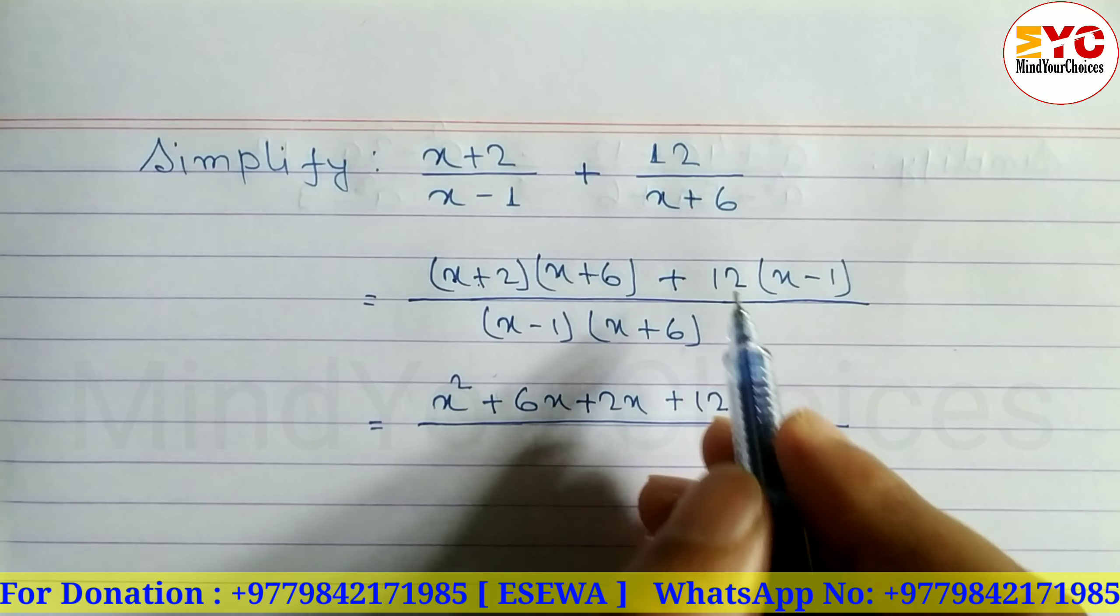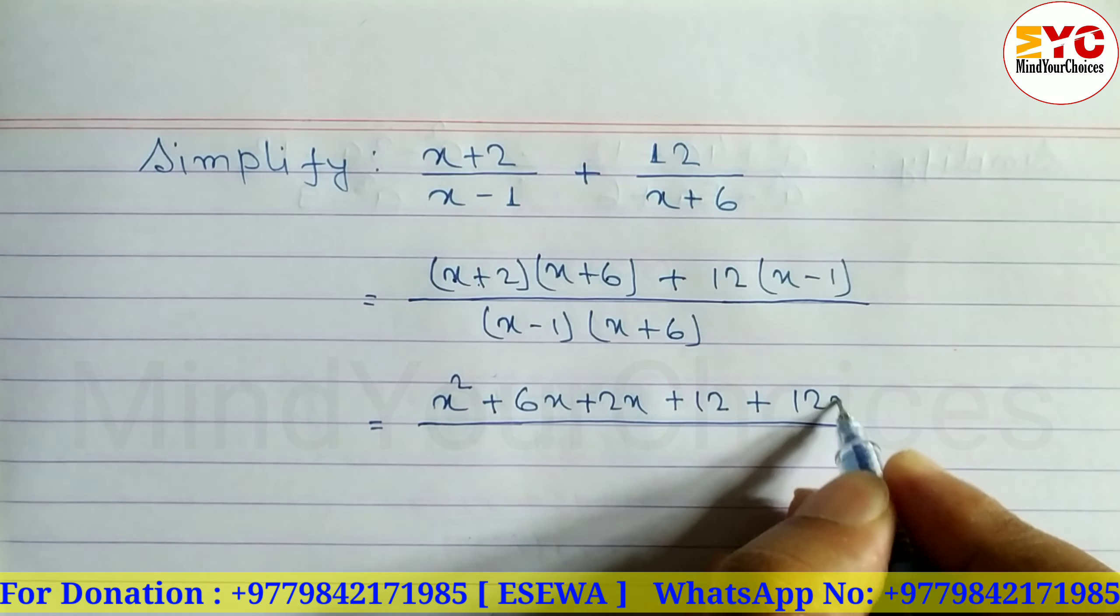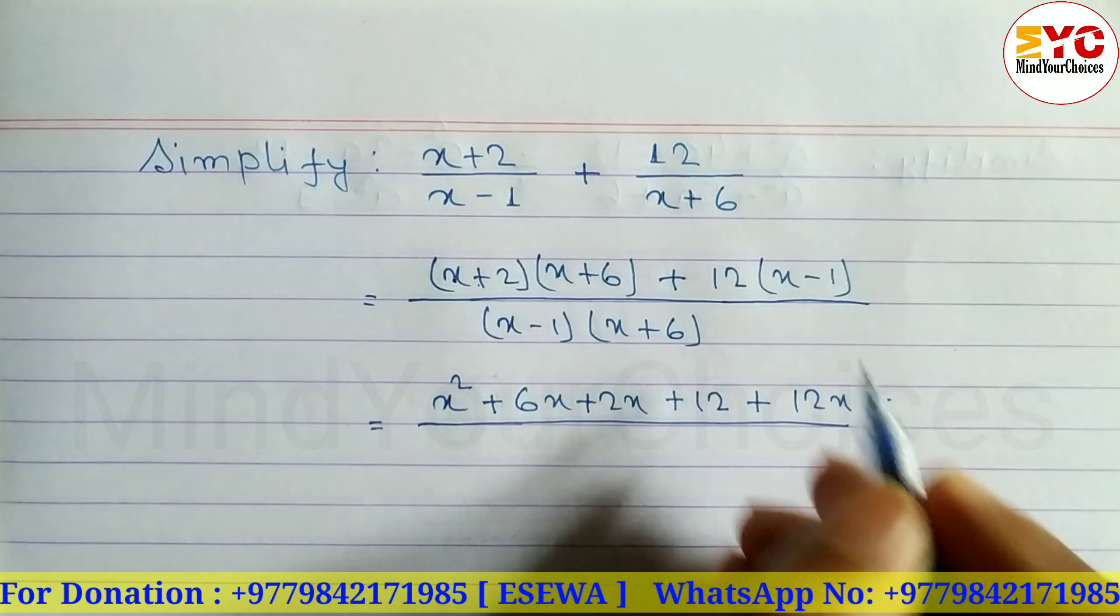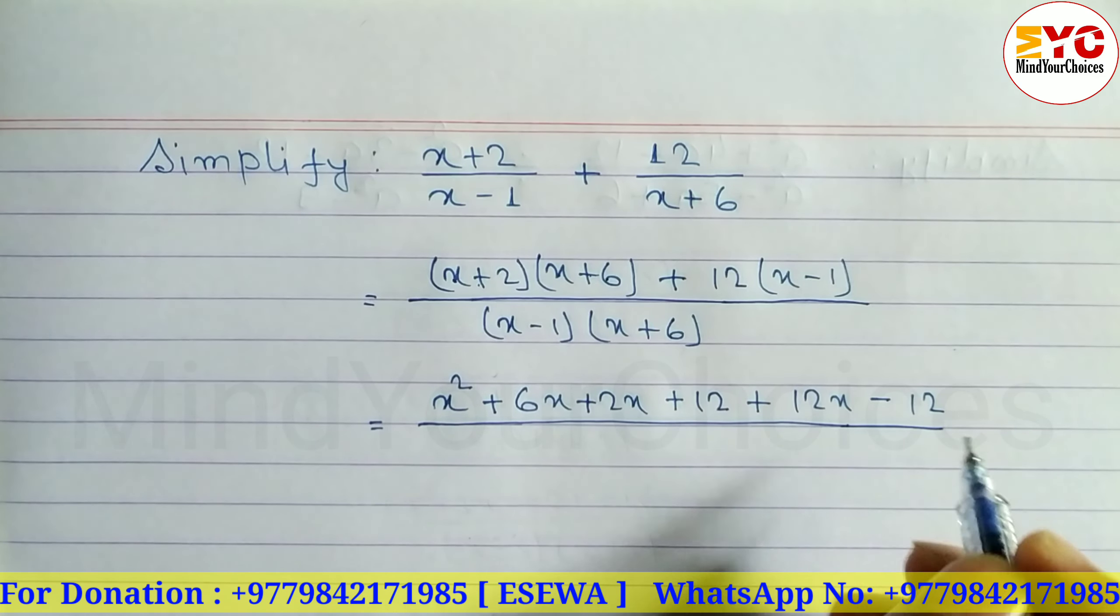Now for this part: 12 into x is 12x, plus. Minus - 12 into 1 is 12. Divided by the same denominator: x minus 1 times x plus 6.